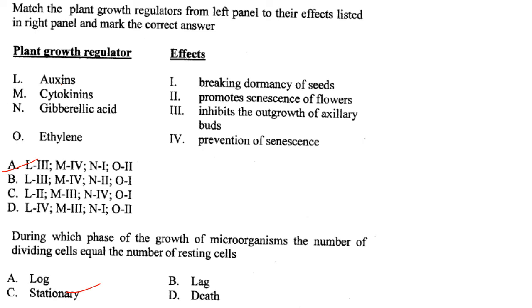During which phase of microbial growth do the number of dividing cells equal the number of resting cells? It is the stationary phase. Answer is option C.